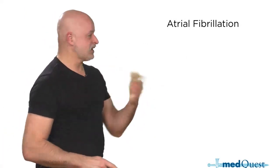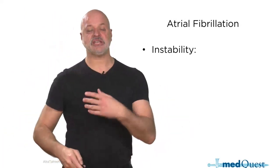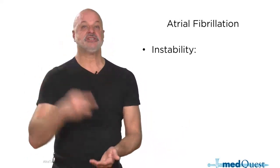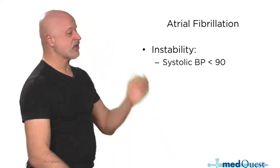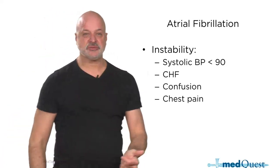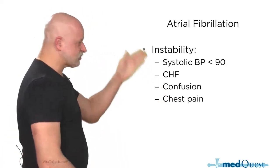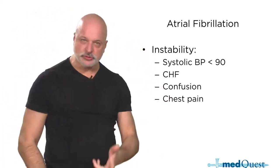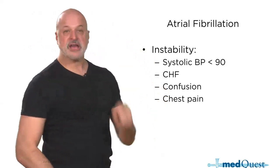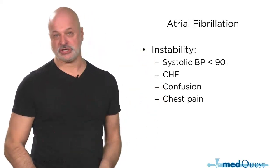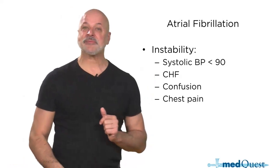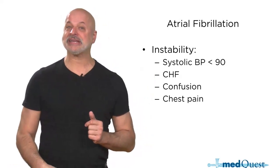What does it mean to be unstable? The same as for all other disorders: chest pain, shortness of breath, hypotension, confusion. These signs mean you're not getting enough perfusion — that's what we mean by hemodynamic instability.